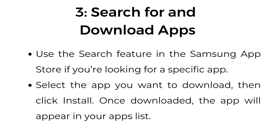Step number three, search for and download apps. Use the search feature in the Samsung App Store if you're looking for a specific app. Select the app you want to download, then click on Install. Once downloaded, the app will appear in your apps list.